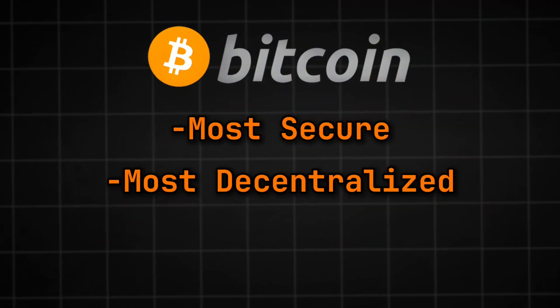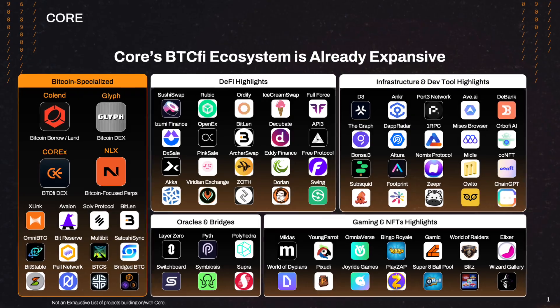Bitcoin is the OG of cryptocurrency — it's the most secure, the most decentralized, and the best store of value. But when it comes to Web3, when everything is about decentralized finance, dApps, and taking your crypto and putting it to work, Bitcoin is really lacking. It's like a classic sports car — awesome for speed, but lacking in some of the features needed for this Web3 fast lane. The same reasons why we love Bitcoin, that security and decentralization, are the same reasons it's missing out on so much.